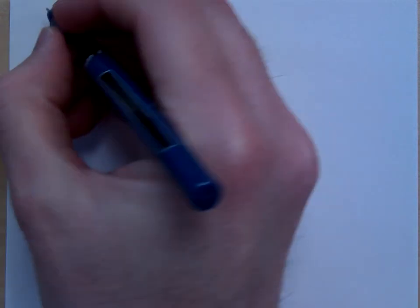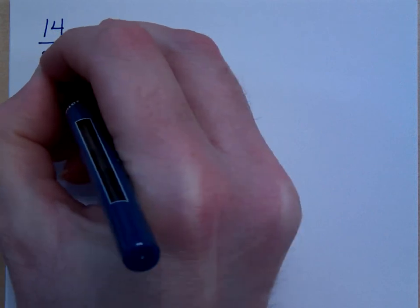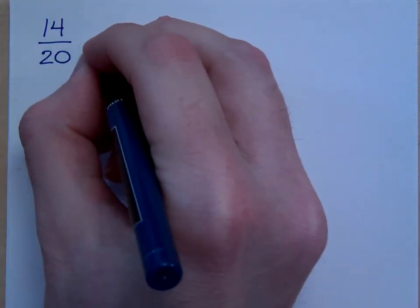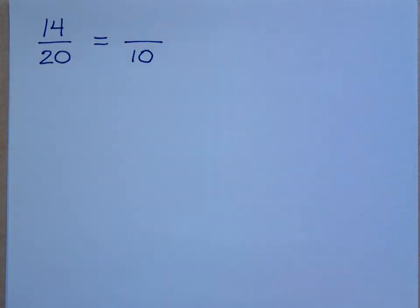Now, I said that we could also go the other way. Going the other way means taking something like this. 14 over 20. I want to know, can I make this a fraction that is over 10? Can I make that denominator smaller?